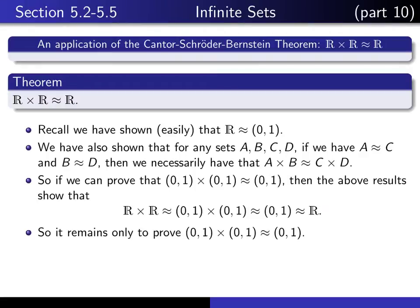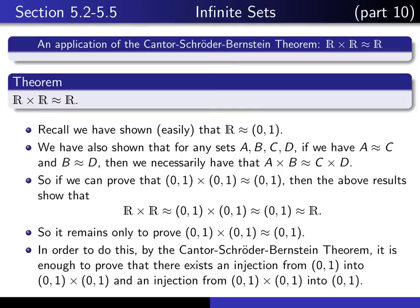So that means that the only thing that remains to be shown is that (0,1) × (0,1) and (0,1) have the same cardinality. We're going to do it by making use of the Cantor-Schröder-Bernstein theorem, and that means that it's enough for us to produce an injection from (0,1) × (0,1) into (0,1), and an injection from (0,1) into (0,1) × (0,1).